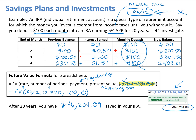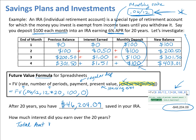That amount encompasses both the interest you've earned and all the monthly deposits. Let's work out exactly how much you've deposited, and therefore how much of that total is interest. We deposit $100 each month, multiply by 12 months per year, then multiply by 20 years. That gives us a total of $24,000 deposited into the account.